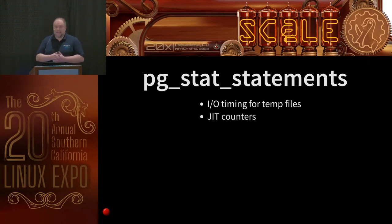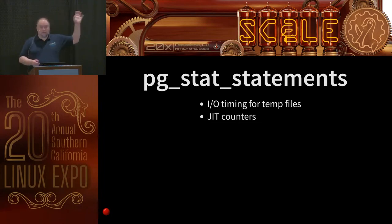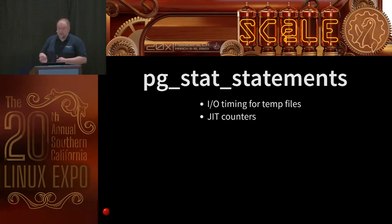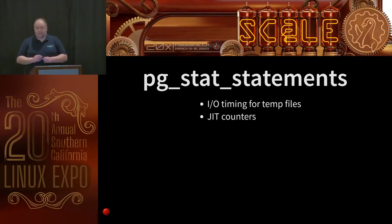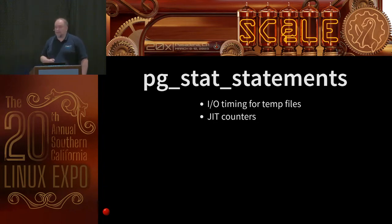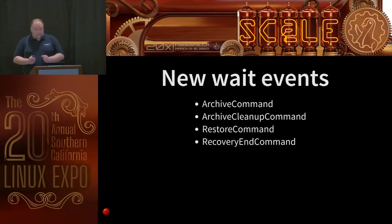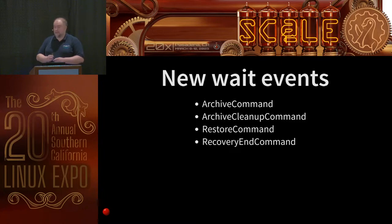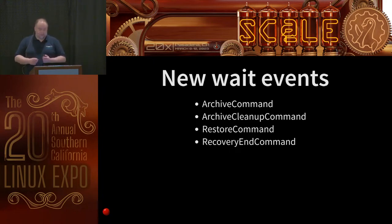If you're not using pg_stat_statements, you really should — it's an excellent extension shipped as part of the standard server that shows what's going on in your system. Postgres 15 adds IO timing values for temp files, and JIT counters showing how much time and how many times different parts of JIT have been activated. There are also some new wait events: wait event archive_command and restore_command, which fire when those commands are running.